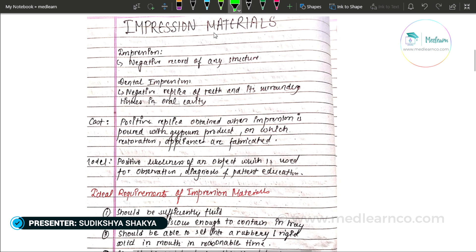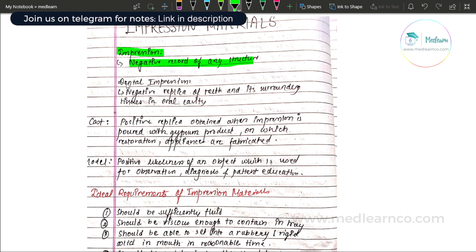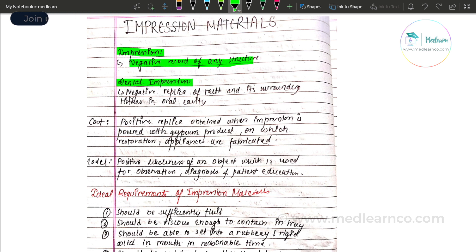When discussing impression materials, first we should know what an impression is. An impression is the negative record of any structure. A dental impression is the negative replica of the teeth and its surrounding tissue in the oral cavity.